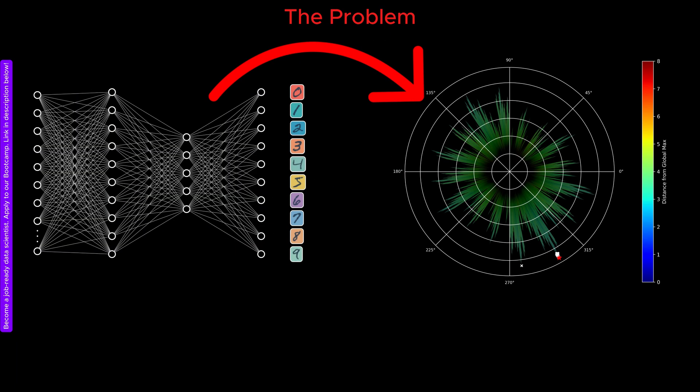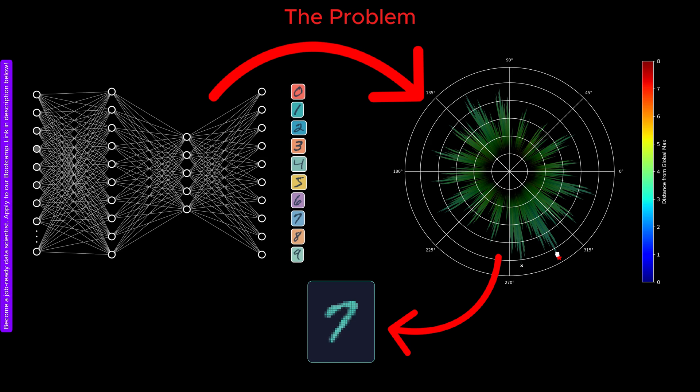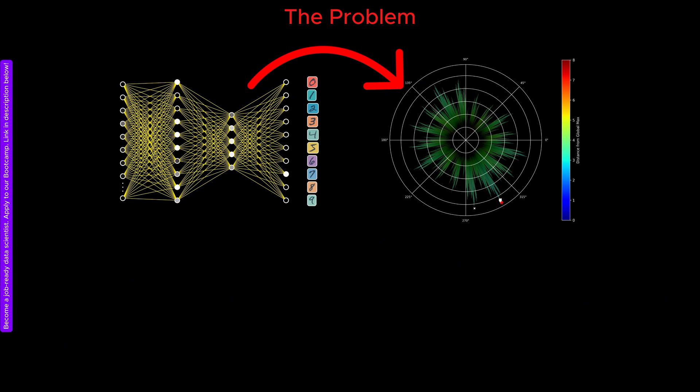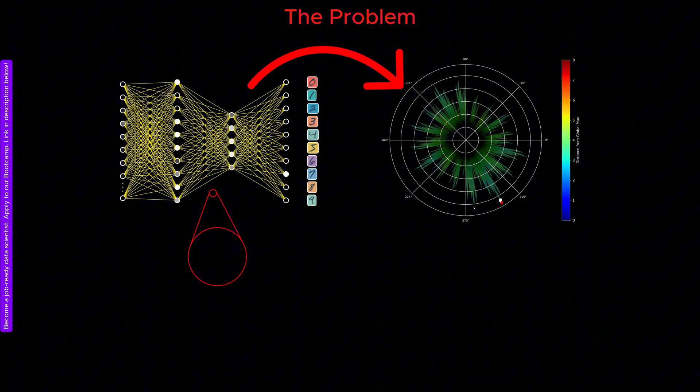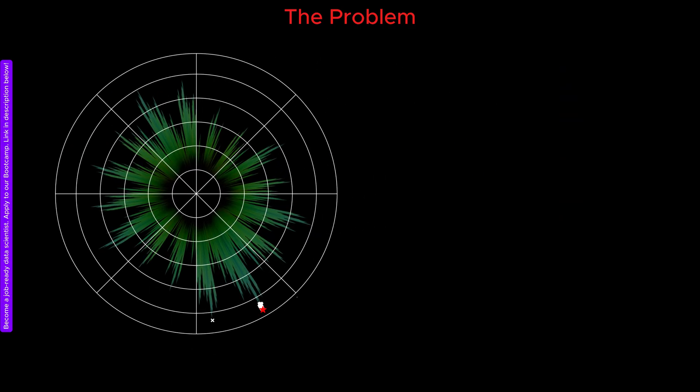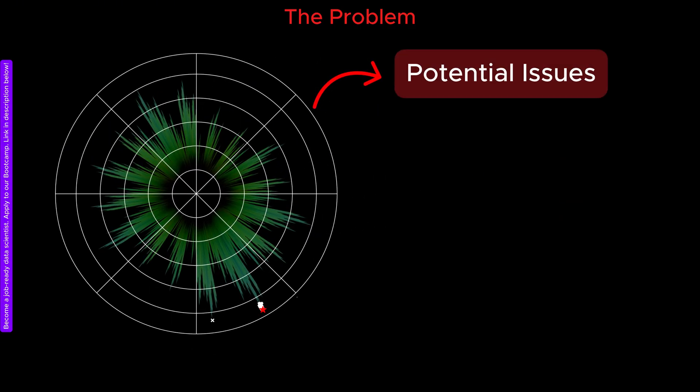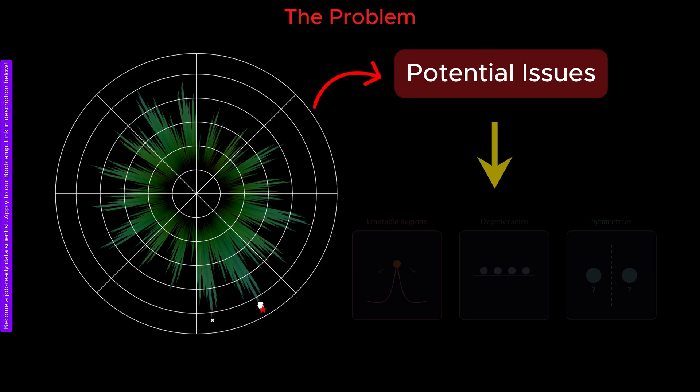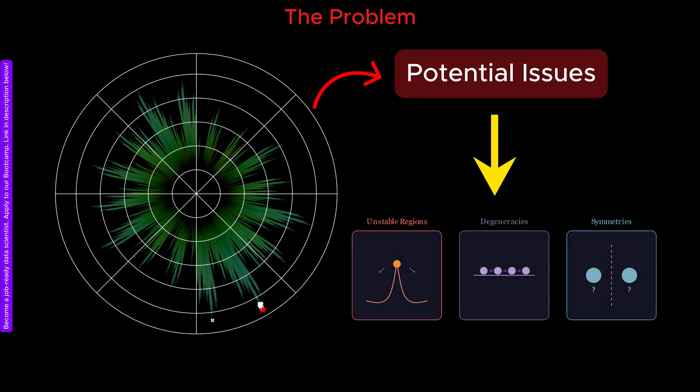The importance of knowing the free energy of neural networks is that, by knowing just the free energy, we can directly predict the class of images without getting into the microscopic details of how information flows from the input layer to the output layer. The benefit is not only computational. We also gain a clear picture of why the neural network behaves the way it behaves. Even more importantly, the landscape of free energy allows us to forecast potential issues before they actually occur, by identifying unstable regions, degeneracies, or unexpected symmetries in the model.